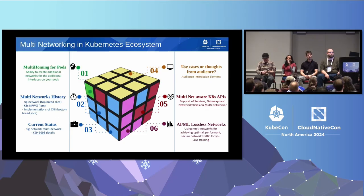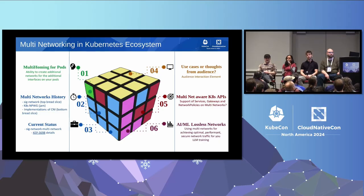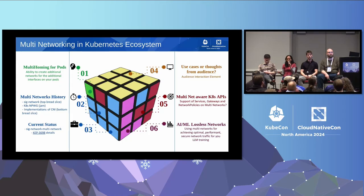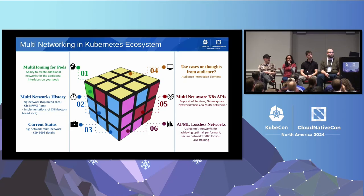Multiple networks has a lot of use cases. Traditionally, the Kubernetes networking model says that all pods should be able to talk to all pods — communication is completely open, and by default they're all attached to one single overlay network. But we might want more than one interface inside the pod for various use cases like security purposes, isolation, or to group workloads in multiple networks within your cluster.